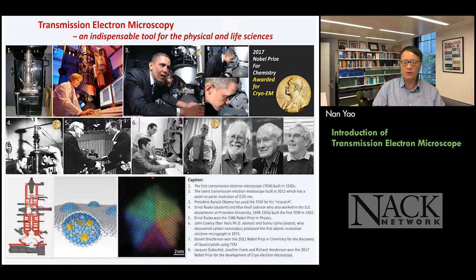Number seven is Nobel Prize winner Dan Schuchman. He discovered a synthetic quasicrystal, which earned the Nobel Prize in 2011. As Jim mentioned, at Princeton we discovered the second phase — the natural quasicrystal. In the past, minerals and crystals only existed in two forms: crystalline or non-crystalline. Since our work, solid matter now has a third form. We call it a natural quasicrystal. So TEM really made a huge contribution to the development of science and technology.